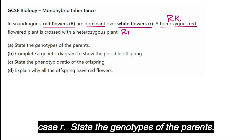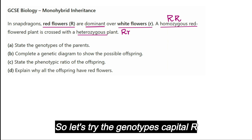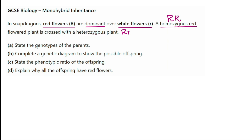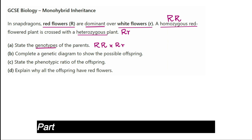Part A: state the genotypes of the parents. So let's write the genotypes. One parent is capital R capital R, and the next parent is capital R lowercase r.